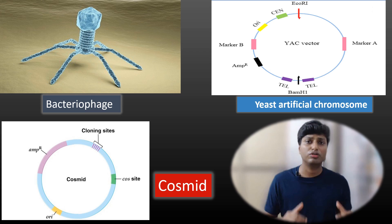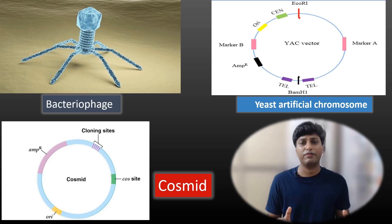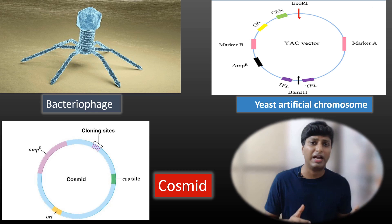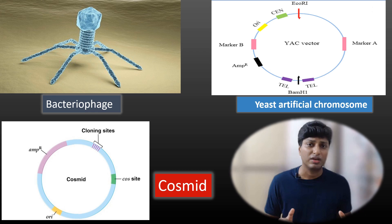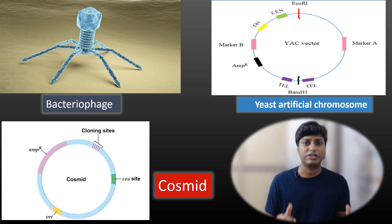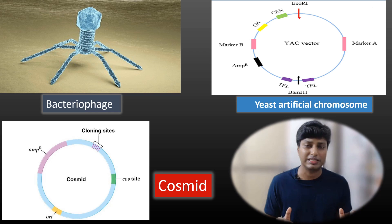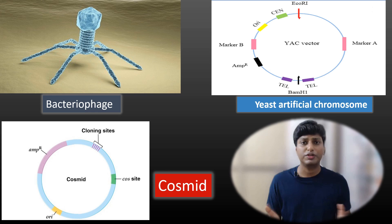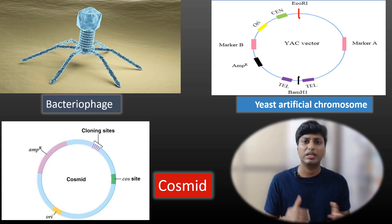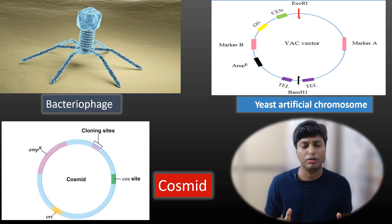Apart from these, there are also other types of cloning vectors — like plant and animal viruses, which are often used as vectors to transfer foreign genes inside eukaryotic cells. Sometimes mammalian artificial chromosomes are also used to transfer a particular gene inside the host cell.